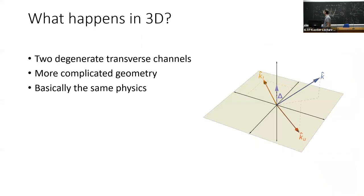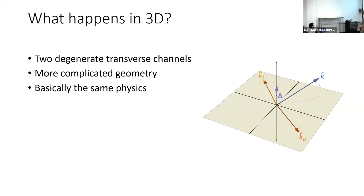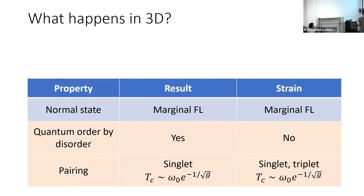I'm going to skip most of the 3D discussion due to time. In 3D the answer is basically the same but more complicated: if you have a vector k then in the transverse sector there's a whole plane to span. The system is a marginal Fermi liquid both without and with strain — this is well known from three-dimensional systems, which are always marginal Fermi liquids even at the critical point because of dimensionality.